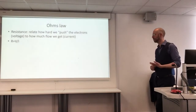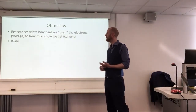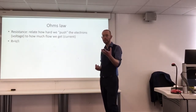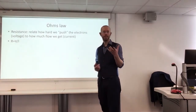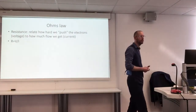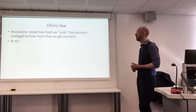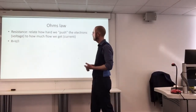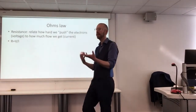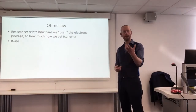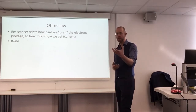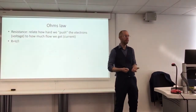That gives us this equation: R, this thing we call resistance, would be the voltage divided by the current — how hard we're pushing electrons around a circuit divided by the flow rate we get. For a low resistance, we don't have to push very hard to get a high flow rate. Whereas if we've got a high resistance, we have to push very hard and still only get a small flow rate of electrons.